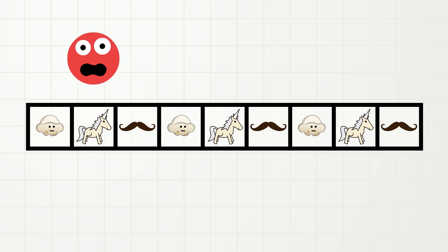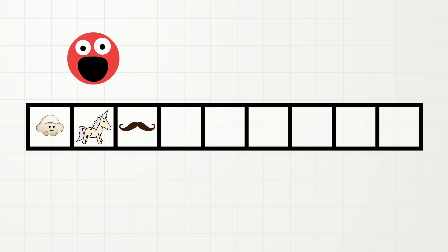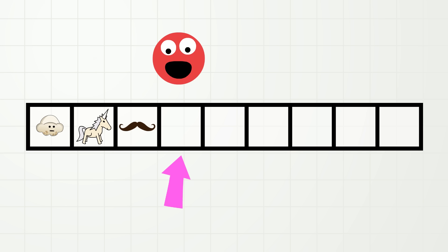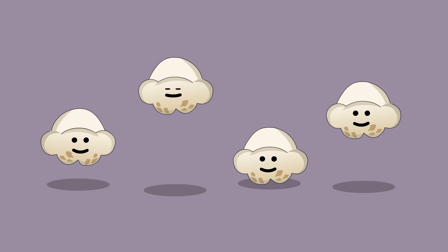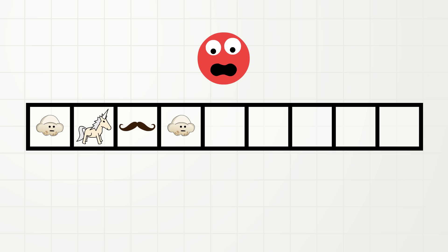And now I have some questions. Question number one: here is the core of the pattern — popcorn, unicorn, mustache. So what would come next right here? That's right, it would be popcorn! And after popcorn, right here, what would come next? That's right, it would be unicorn!